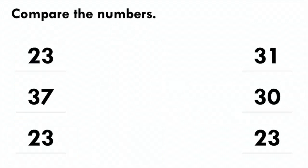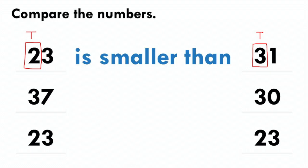Let us look at a few more examples. We have 23 and 31. When we compare numbers, we look at the tens first. I will box up the tens first, so I have 2 tens in 23 and 3 tens in 31. By comparing these two numbers, I know that 2 is smaller than 3, so 23 is smaller than 31.